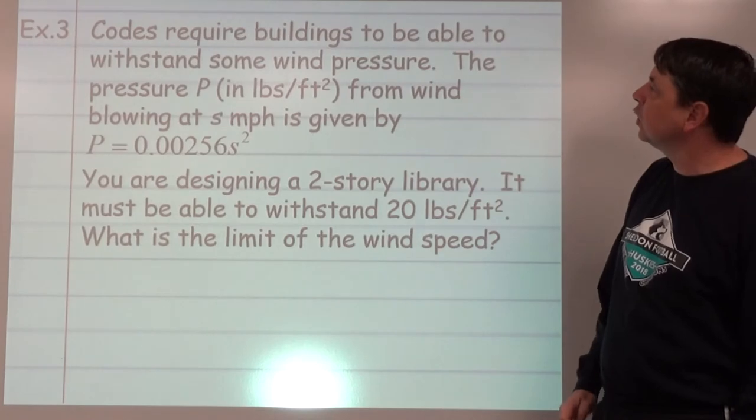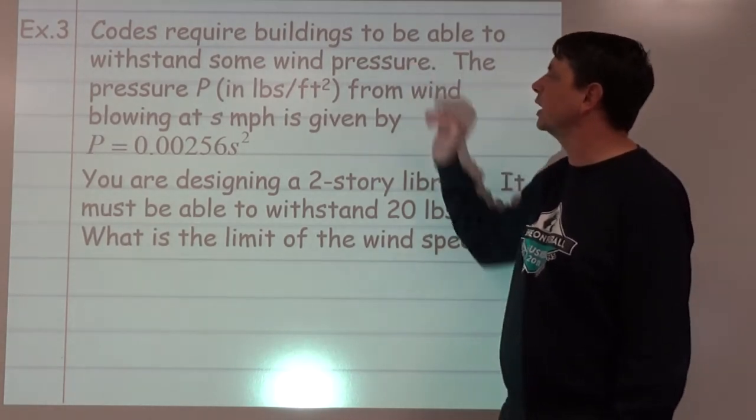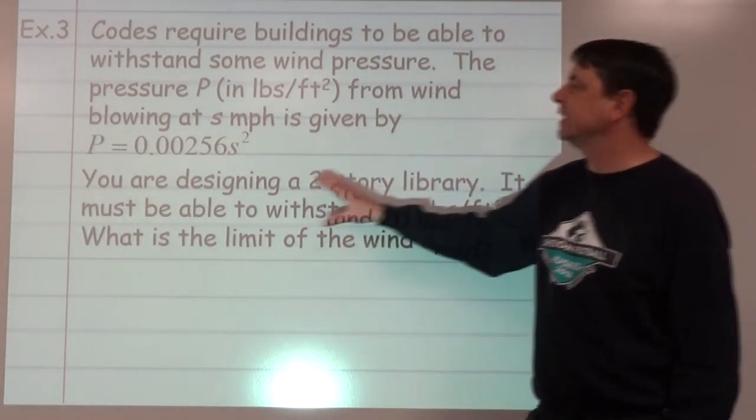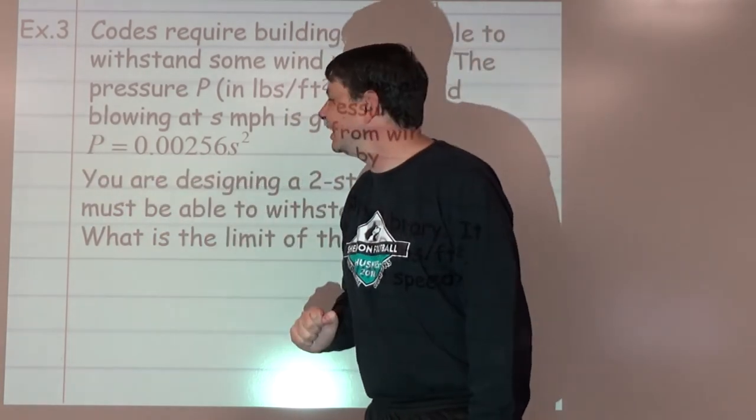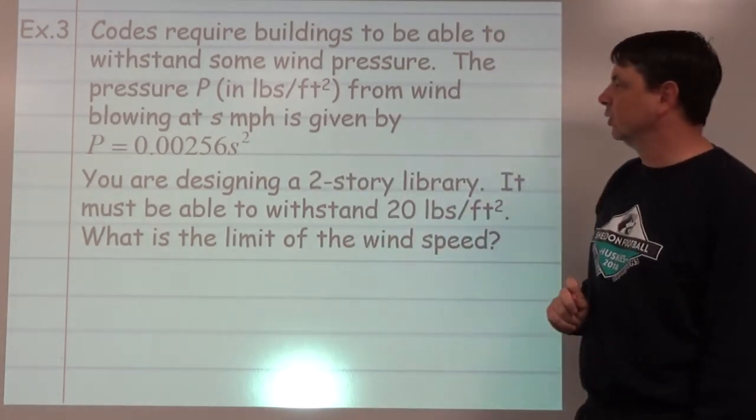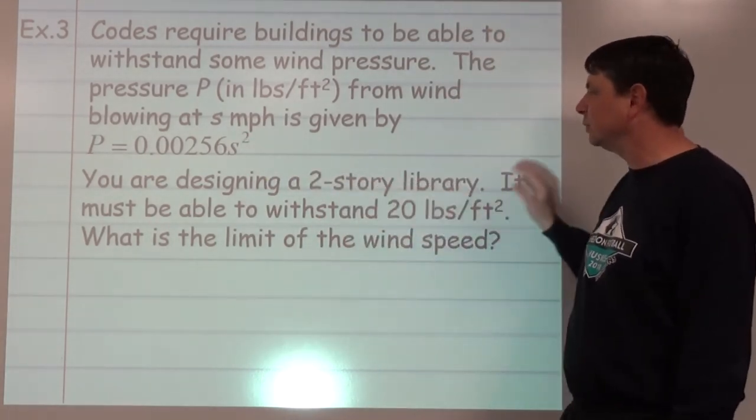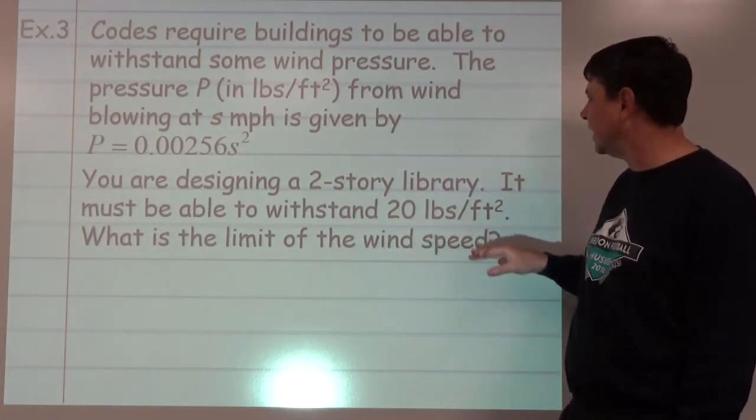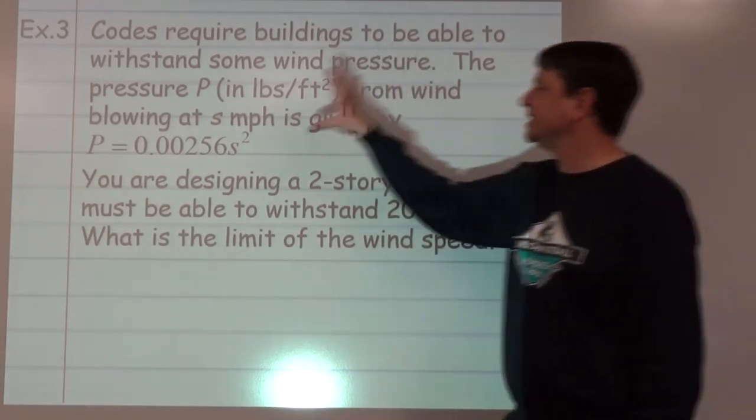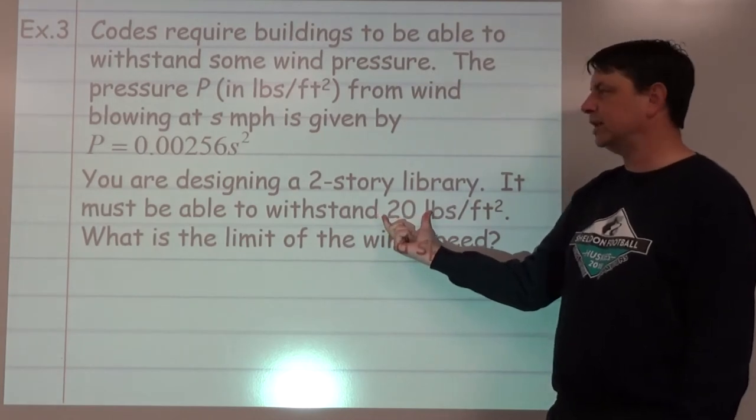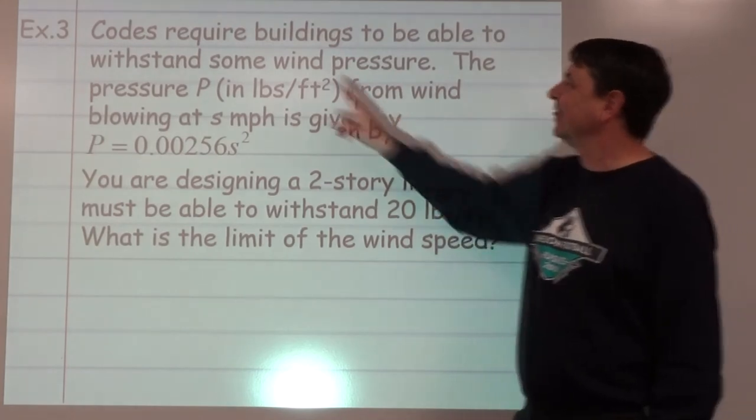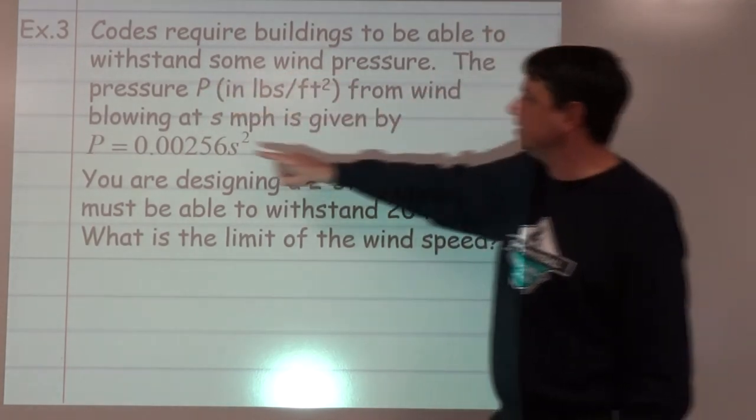Example number 3: Codes require buildings to be able to withstand some wind pressure. That pressure from the wind blowing at s miles per hour is given by the equation: pressure equals 0.00256 times s squared, where s is our speed of the wind. If you are designing a two-story library, it must be able to withstand 20 pounds per square foot of pressure. What is the limit of the wind speed? So we're going to take our equation and say, well, where would we put the 20?